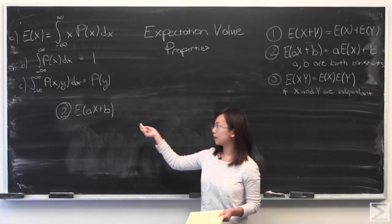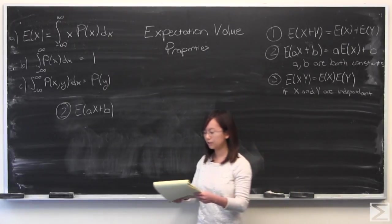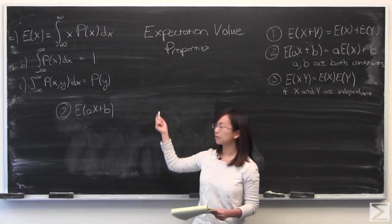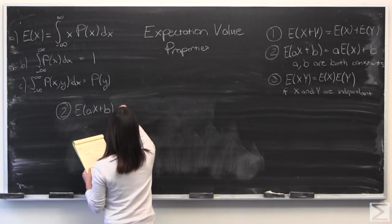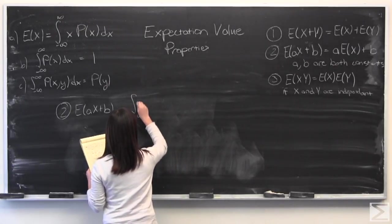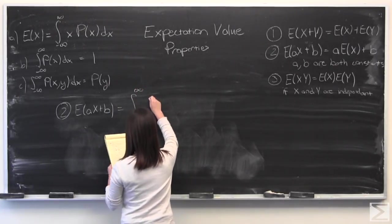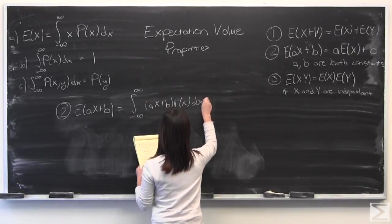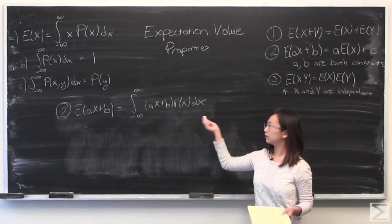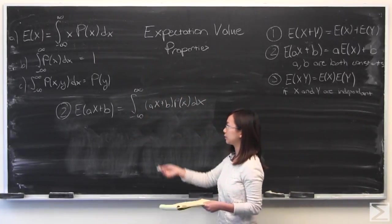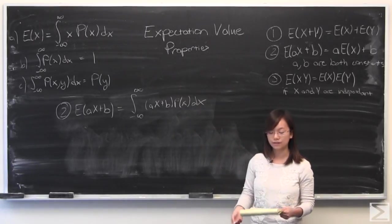First note that a and b are both constants. X is the only variable. So when I write this out using property A with an integral, it will be one integral. Since X is the only variable, the only integral we have to worry about is x and the probability density function of x.